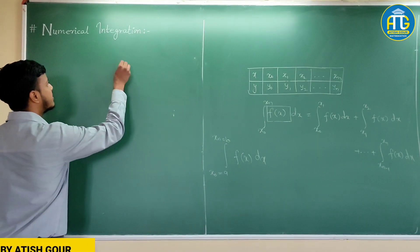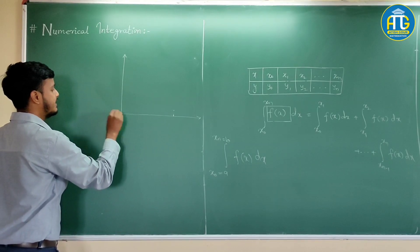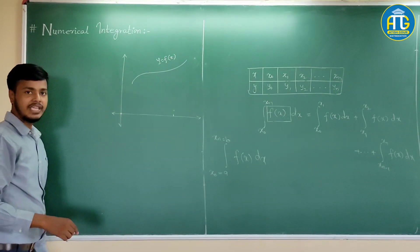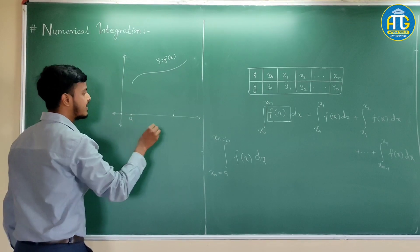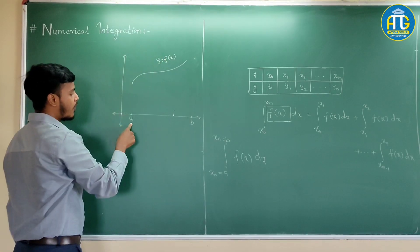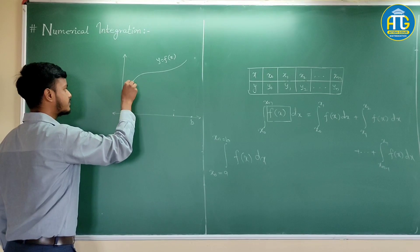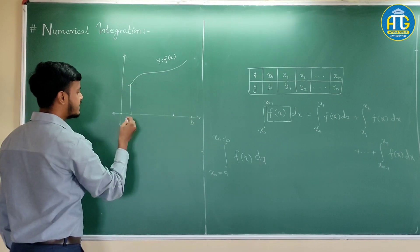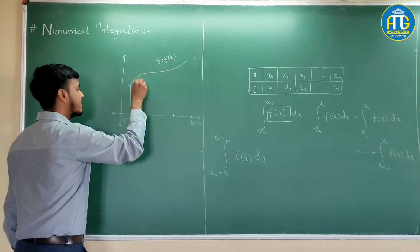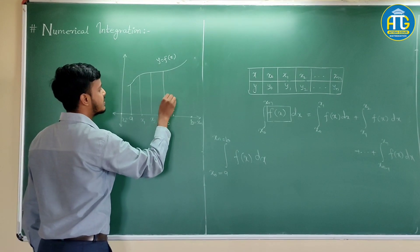Let us understand this geometrically. Suppose you have the function y equals f(x), and here are some points from a to b. We have to find the integration from a to b, so we divide this interval: this is x0, this is xn, and there would be points x1, x2, x3, and so on.